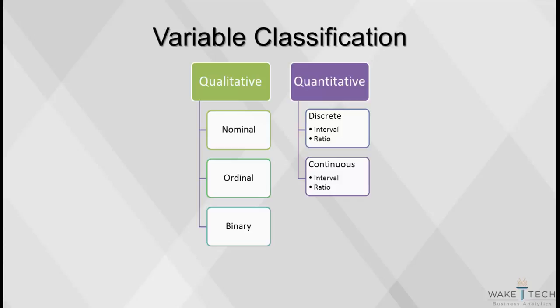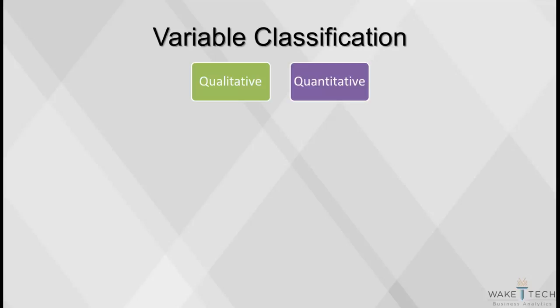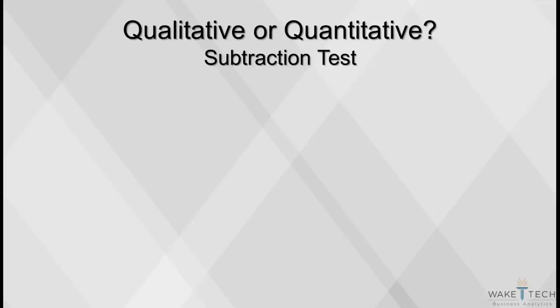We'll start by discussing how to determine whether a variable is qualitative or quantitative. The best way to decide whether a variable is qualitative or quantitative is to use the subtraction test. If two experimental units, such as people, have different values for a particular measure, then you should subtract the two values and ask yourself about the meaning of the difference.